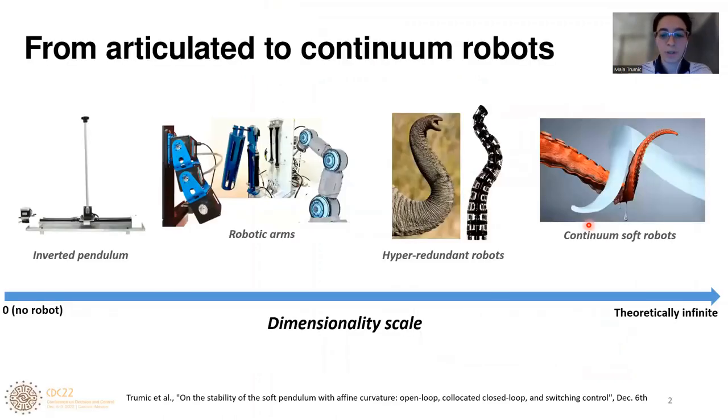Talking about robots, we can look at them from the perspective of dimensionality. Starting from the inverted pendulum that has a single degree of freedom, over robotic arms that have several degrees of freedom and hyper-redundant robots with countably many degrees of freedom, we reach continuum soft robots that have theoretically infinite dimensionality.